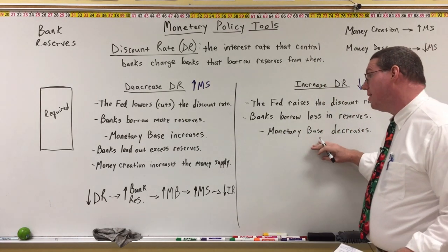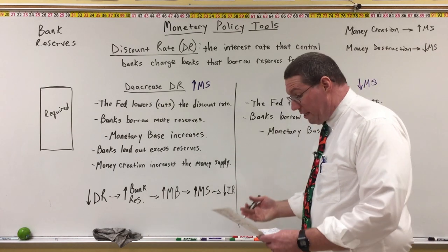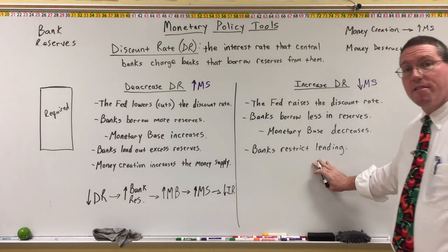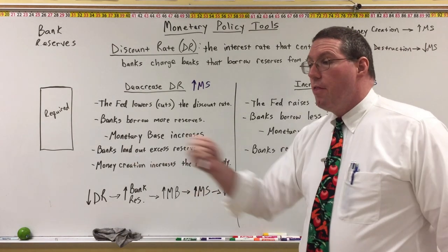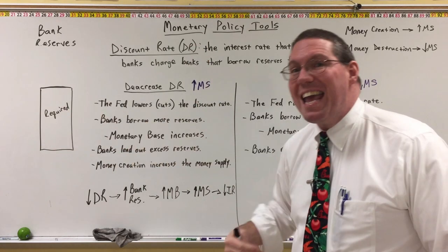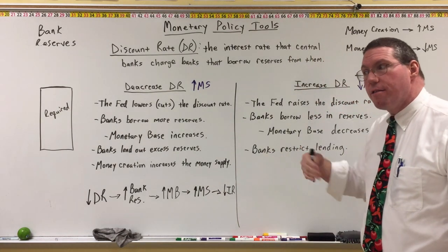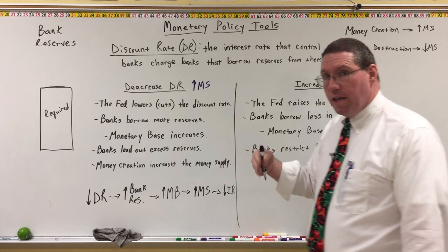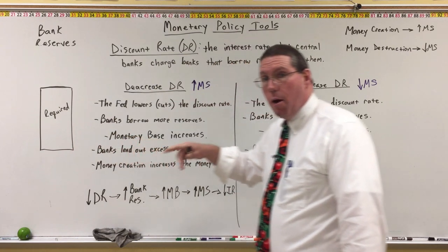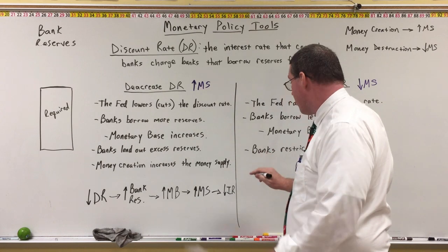When banks borrow less in reserves, they have less money in their reserves — they have their required reserves but they're not adding to that. So that's going to result in a decrease in the monetary base, which is now going to restrict lending. Because there's going to be less lending, and when banks receive payments back from borrowers instead of lending it out again to keep the money creation process going, they put it in to cover their required reserves. That's going to trigger the money destruction process and decrease the money supply.